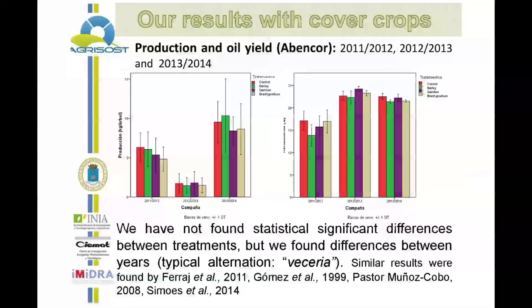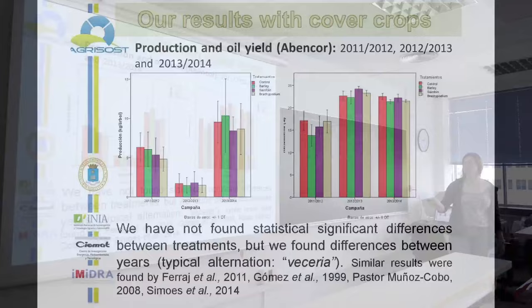These are the results of three campaigns. We found no differences between treatments in production, and no differences in olive oil yield between treatments — only between campaigns. This is because of the typical alternation of olive groves, called 'vecería' in Spain, which happens with all olive groves, mainly with this variety called Cornicabra, which is the most common in Madrid. These results are similar to those found by other groups, although some researchers have found that some cover crops reduce production.